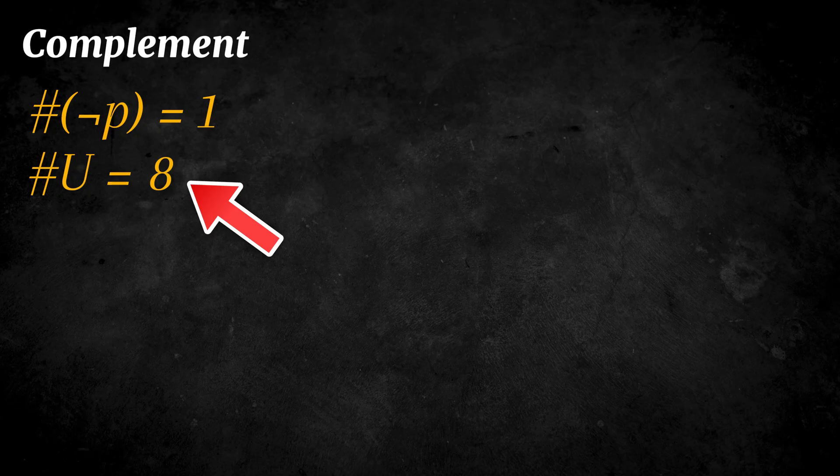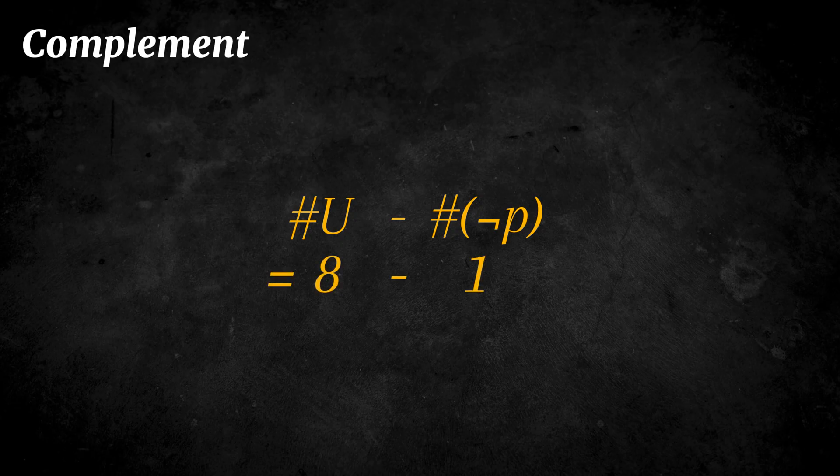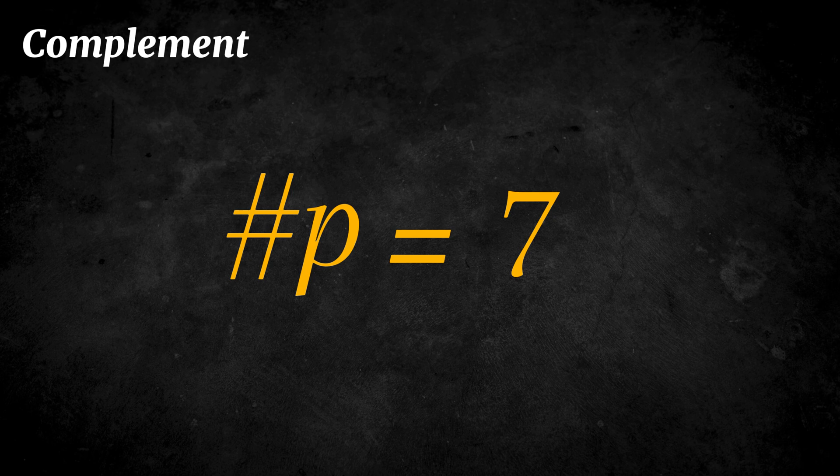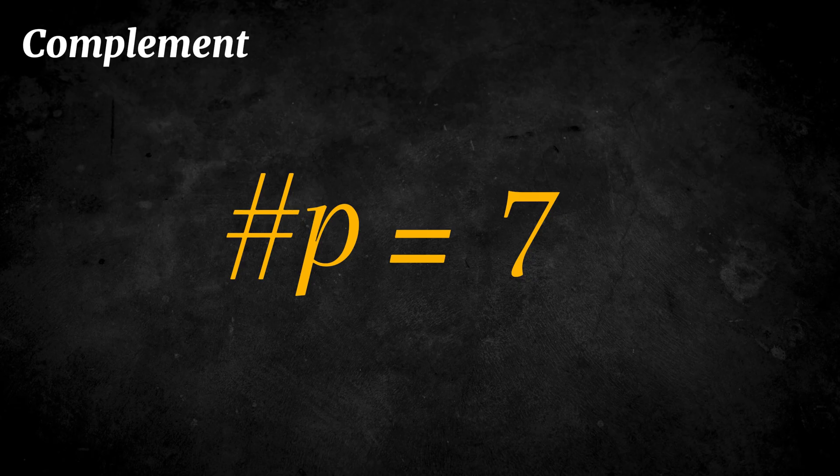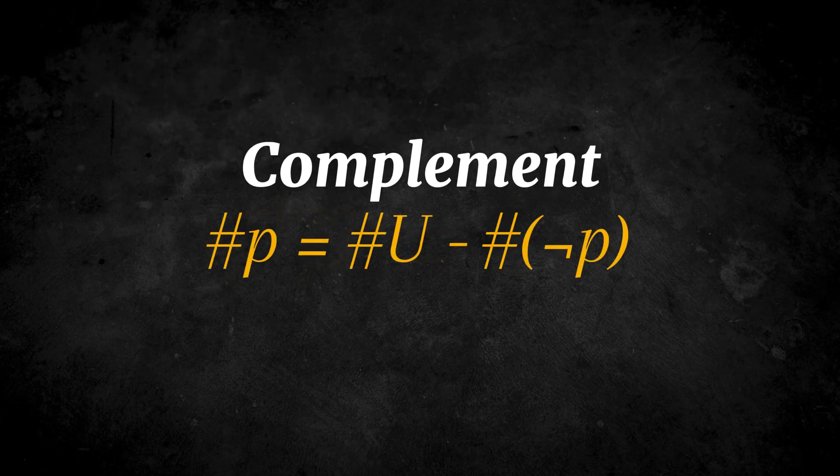Out of those eight outcomes, only one has no heads. So we subtract the complement from the total. Eight minus one equals seven. That means there are seven possible outcomes that contain at least one head. This method is much faster and cleaner than listing all the cases. And that is why the complement rule is such an important tool in combinatorics.